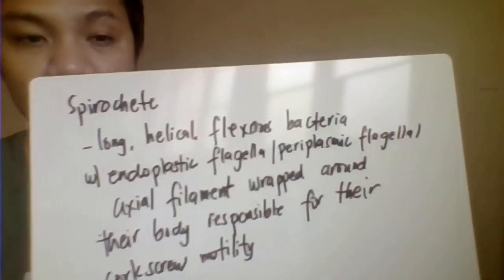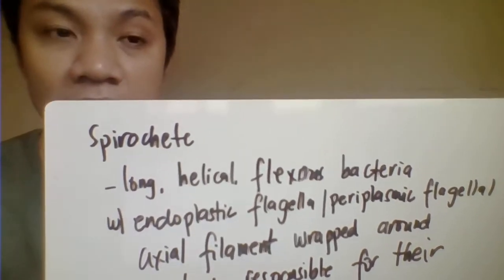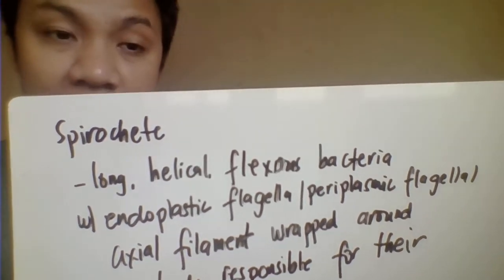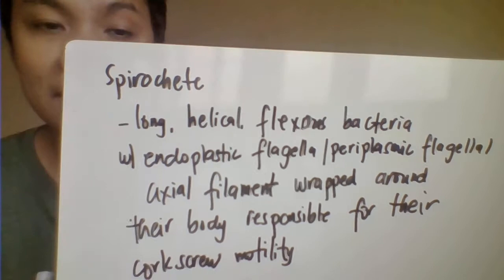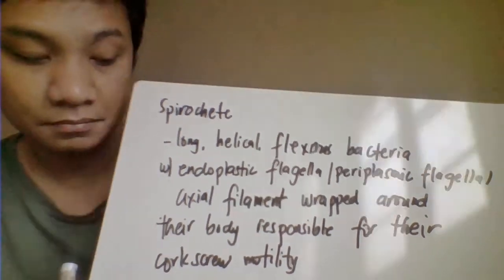Today we're going to discuss about the spirochetes infection. Spirochetes are bacteria which are helical, flexuous, long, and spiral. They contain endoflagella or periplasmic flagella, also called axial filaments, which are responsible for their movement and corkscrew motility. These are gram-negative bacteria and they are microaerophilic.